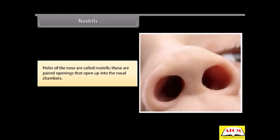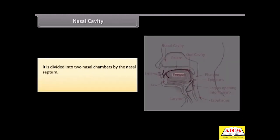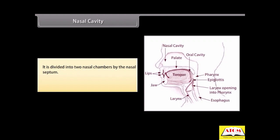Nostrils. Holes of the nose are called nostrils. These are paired openings that open up into the nasal chambers. Nasal cavity. It is divided into two nasal chambers by the nasal septum. Each nasal chamber consists of three regions: vestibular, respiratory, and olfactory regions.